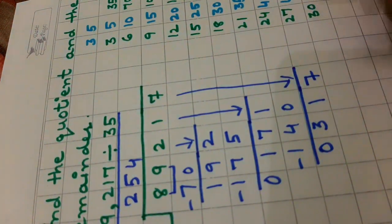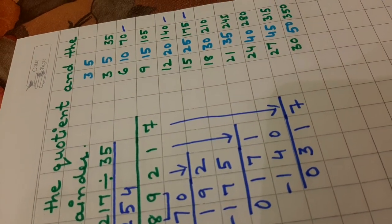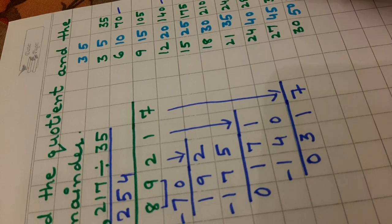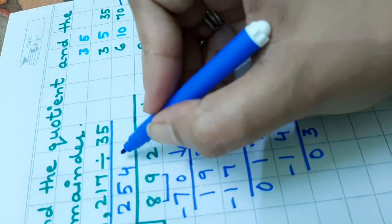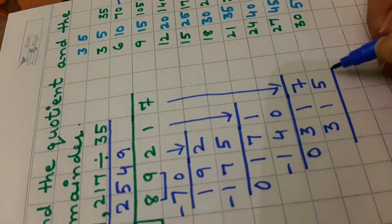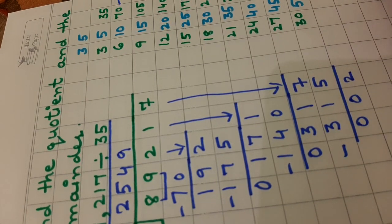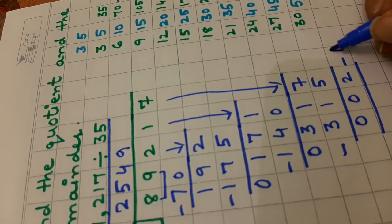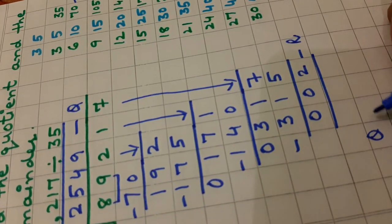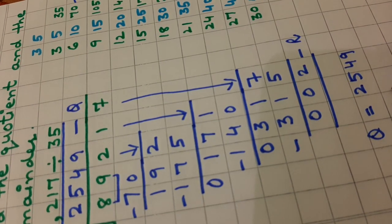It is 317 now. We will again check out the number equal to 317 or lesser than 317 from the table of 35. And the number is 315. 35 nines are 315. Subtract it. 7 minus 5 is 2. 1 minus 1 is 0. 3 minus 3 is 0. This is the remainder. This is the quotient. Quotient equals 2549 and remainder equals 2.